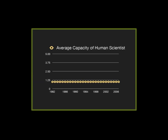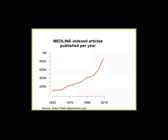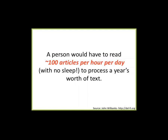That hockey stick curve represents data, but over the same time period, articles reporting on insights into that data also went up by a similar trajectory. If you're an individual scientist interested in finding out what's going on with a particular gene, how do you get through the number of articles you're now asked to get through? My colleague John Wilbanks has estimated that a person would have to read on average about 100 articles per hour per day with no sleep to process just a year's worth of new articles coming out in that single discipline.